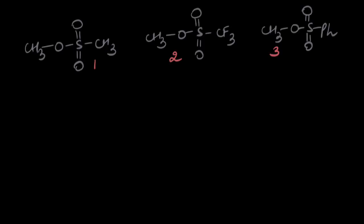In the previous video, we started talking about how the leaving group type affects the rate of an SN2 reaction. Let's take up a few more examples to understand the concept better. In this question, we have to compare the rates of the following substrates towards an SN2 reaction, assuming they are attacked by the same nucleophile.